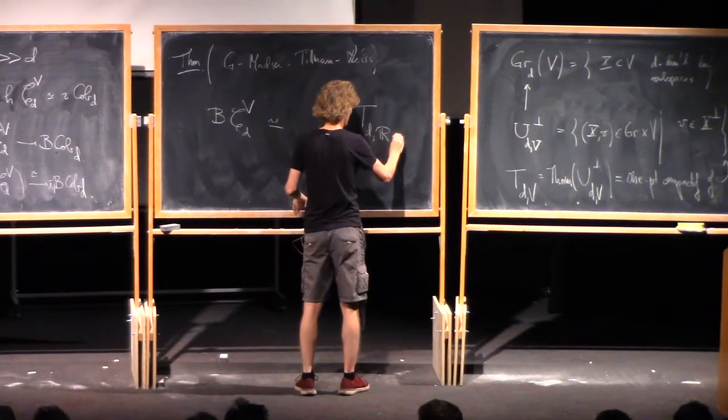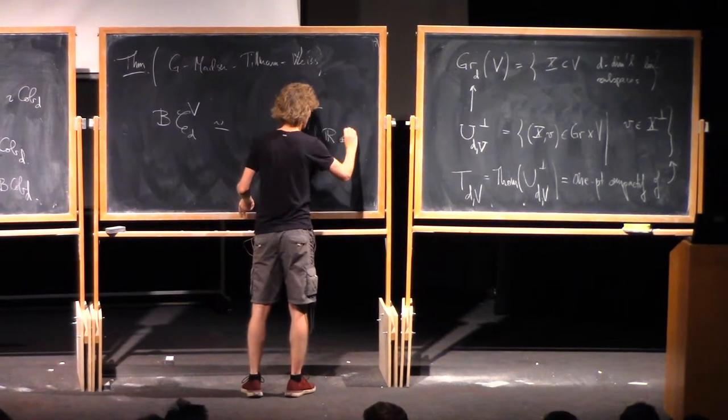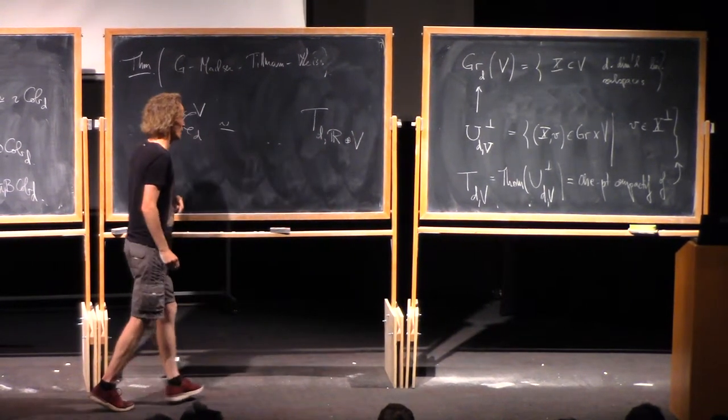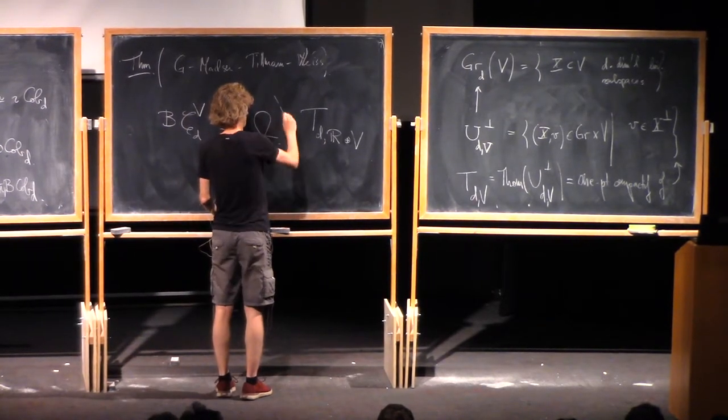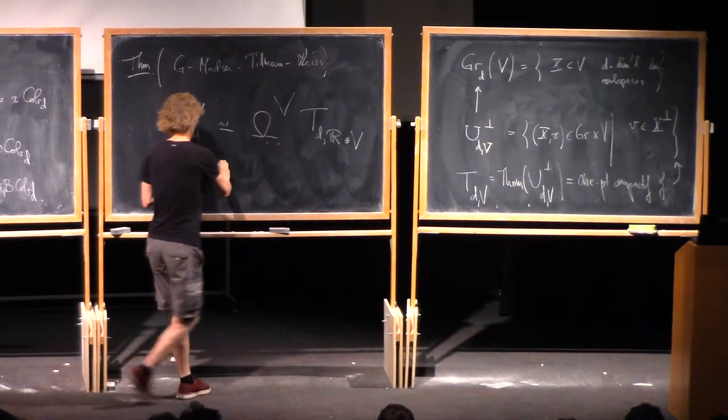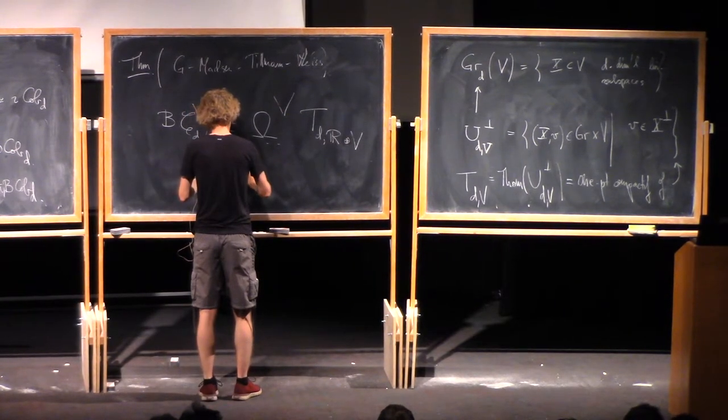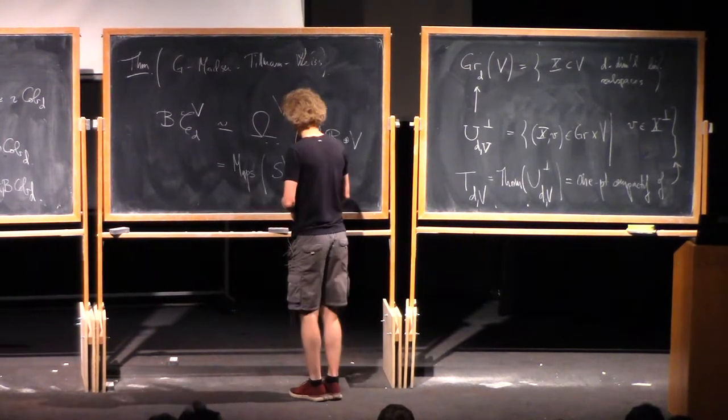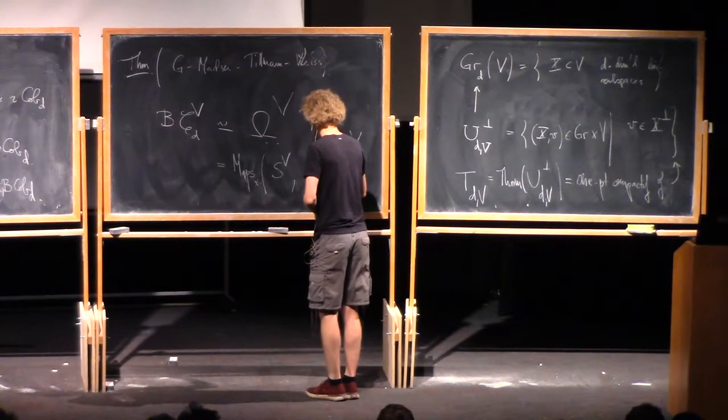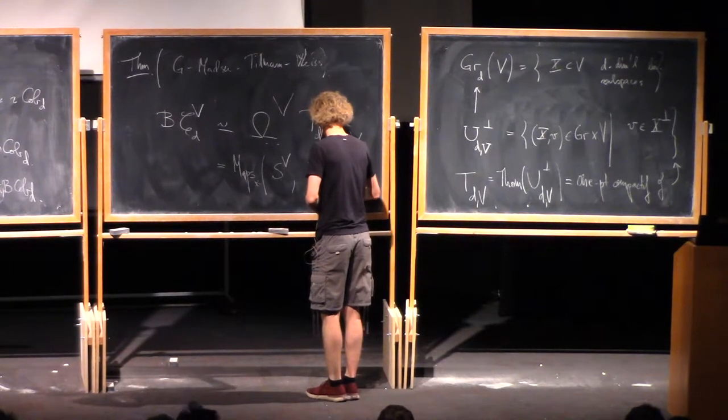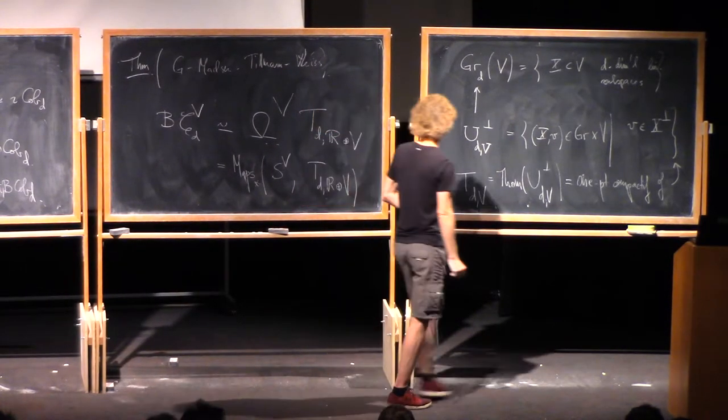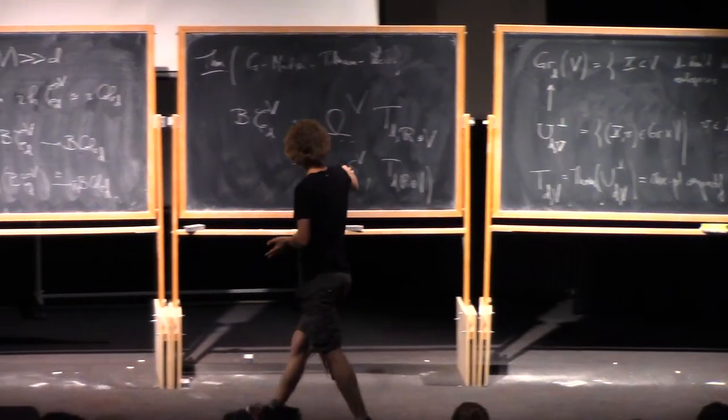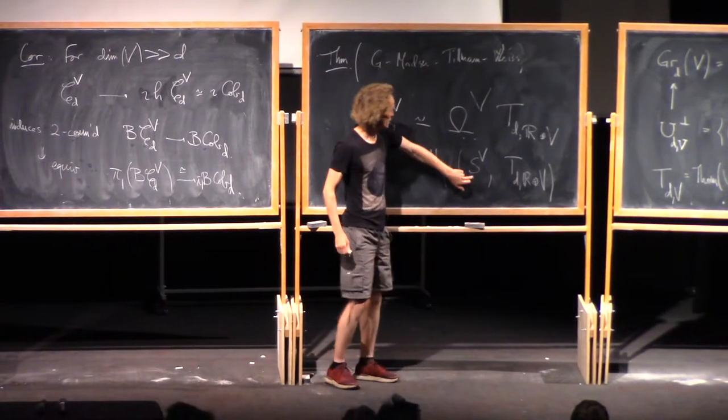Then you take that for R plus V. The R has to do with the morphism directions. And then you take the V-fold loop space. So this means the space of pointed maps from S^V to T(d, R+V). Where S^V means the one-point compactification of V.